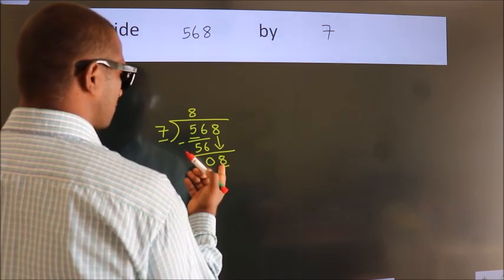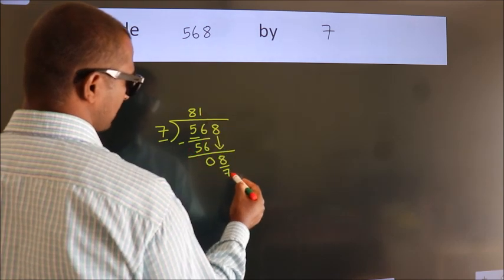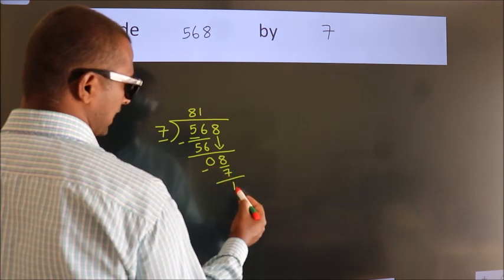A number close to 8 in the 7 table is 7 once, 7. Now we subtract, we get 1.